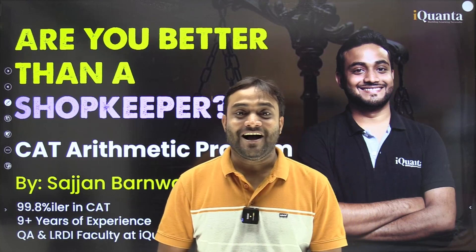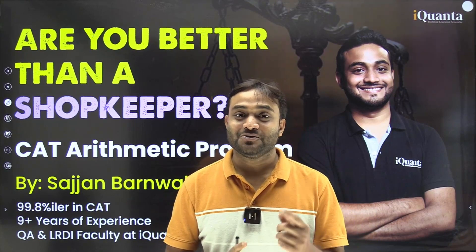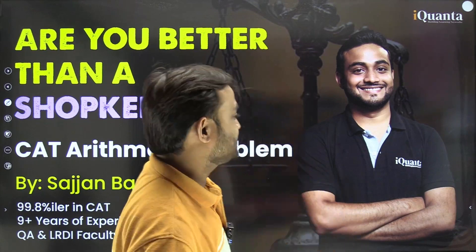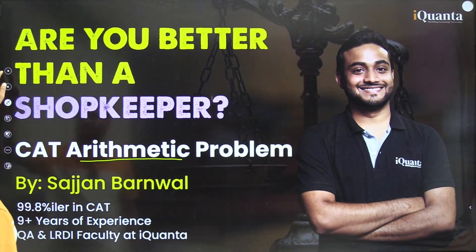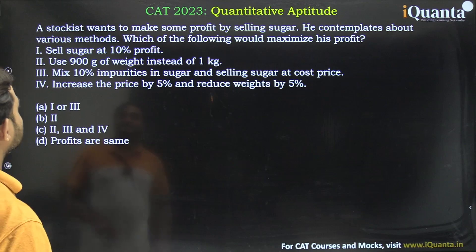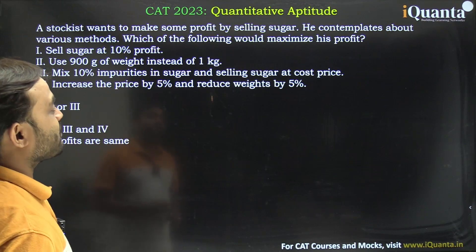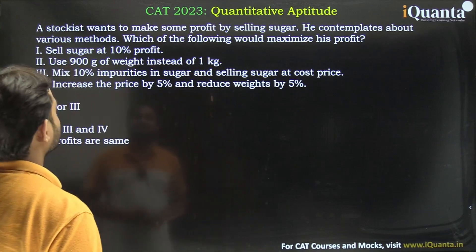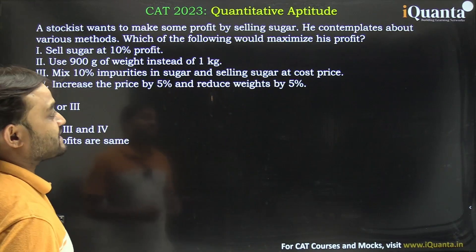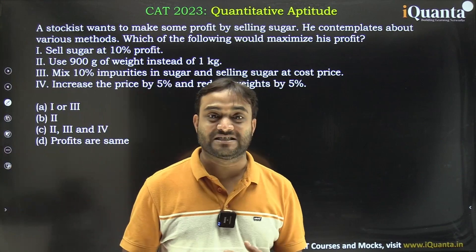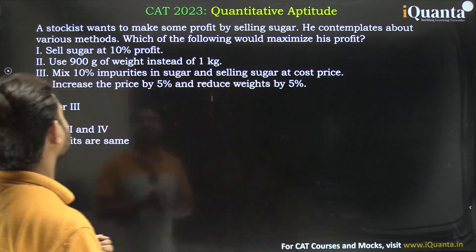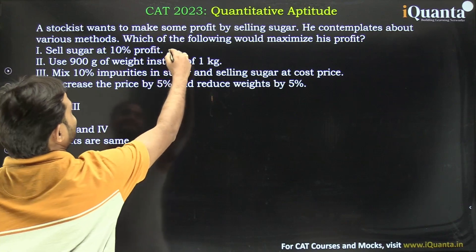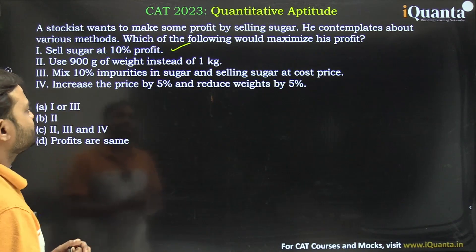Hello everyone. Today we are going to discuss a previous CAT question on arithmetic. It says: a stockist wants to make some profit by selling sugar and contemplates various methods. Which of the following would maximize his profit? Four different cases are given. The first case: sell sugar at 10% profit.